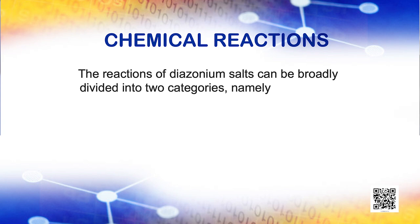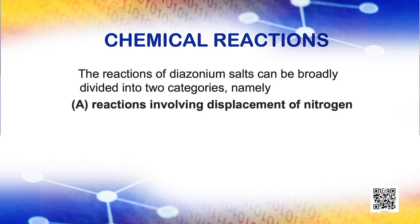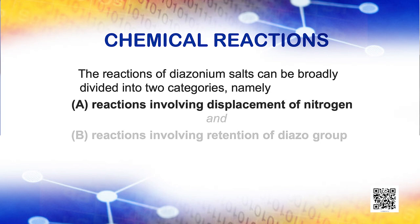The reactions of diazonium salts can be broadly divided into two categories: namely, reactions involving displacement of nitrogen and reactions involving retention of the diazo group. The diazonium group, being a very good leaving group, is substituted by other groups such as chloride, bromide, iodide, cyanide, and hydroxyl, which displace nitrogen from the aromatic ring. The nitrogen formed escapes from the reaction mixture as a gas.